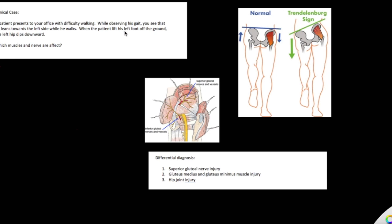When the patient lifts his left foot off the ground, the left hip dips downward. In normal situations, when a person lifts the opposite foot off the ground, the muscles of the hip on the opposite side will contract and pull the hip downward on the same side and upward on the opposite side to maintain a normal gait. In this patient, however, there is a weakness in the muscles on the opposite side. That's why when the patient lifts the opposite foot off the ground, this muscle is unable to contract, and therefore the hip dips downward instead of being pulled up.